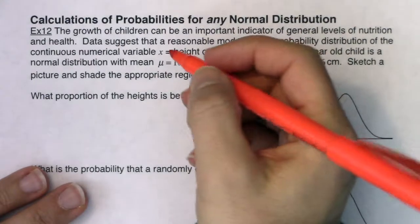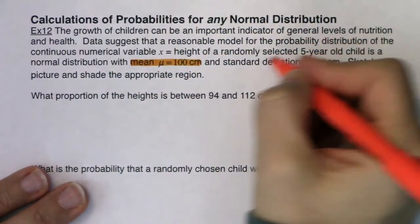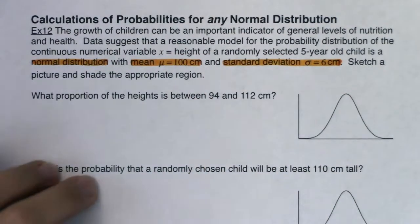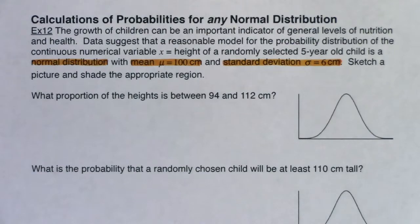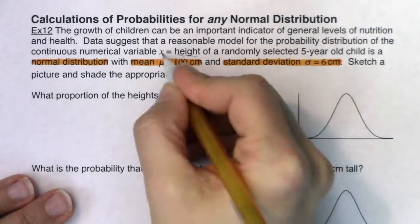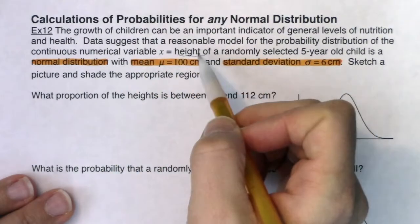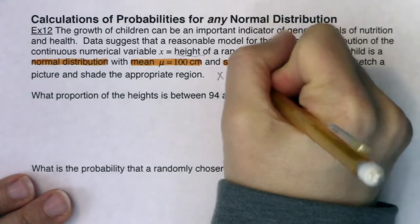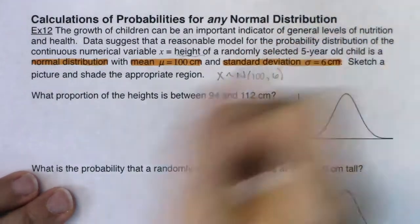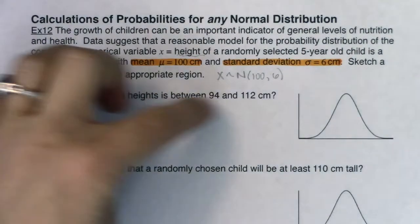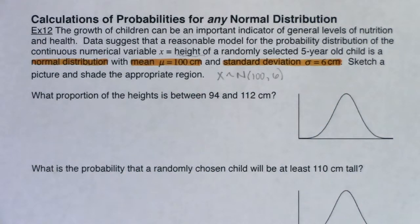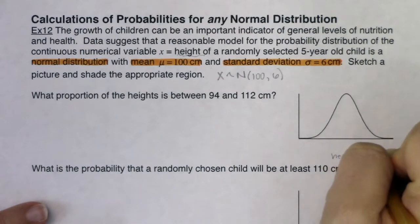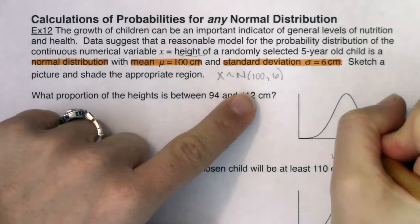Key buzzwords: the mean, the standard deviation, and normal distribution. My variable in this case is the height of five-year-old kids — height is always continuous numerical. We know x has the bell curve shape, right under that peak is 100, and we can scale our x-axis with six. Let me label and scale this x-axis, going three deviations up and three back. This is height in centimeters.